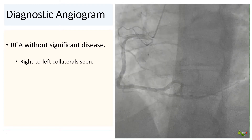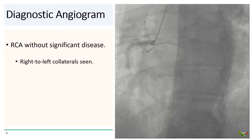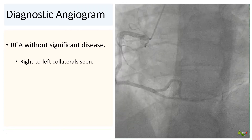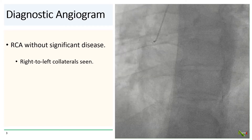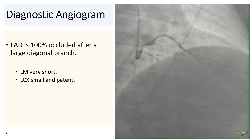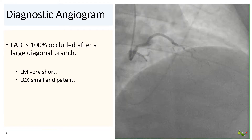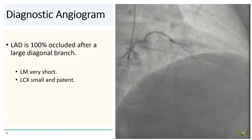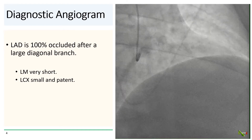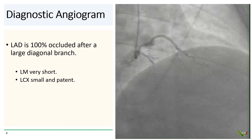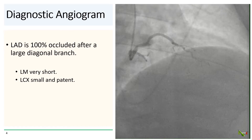On diagnostic angiogram, the RCA was without significant disease, but you can see some right to left collaterals. The culprit is the LAD, which is 100% occluded after the large diagonal branch. The left main is quite short, and you can see a hint of the circumflex, which is small but patent.